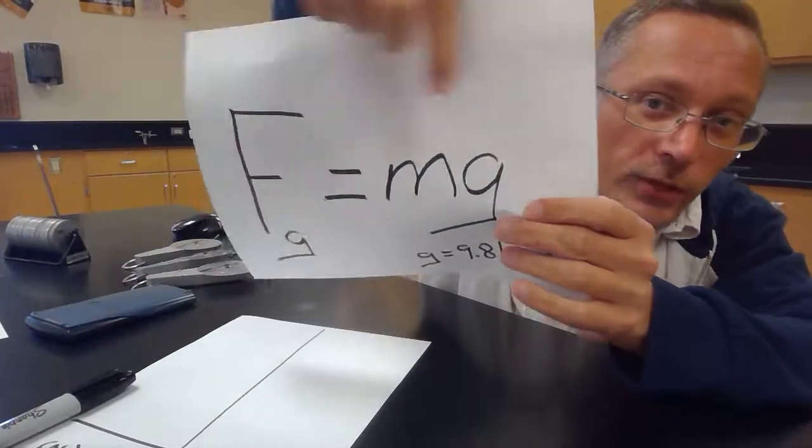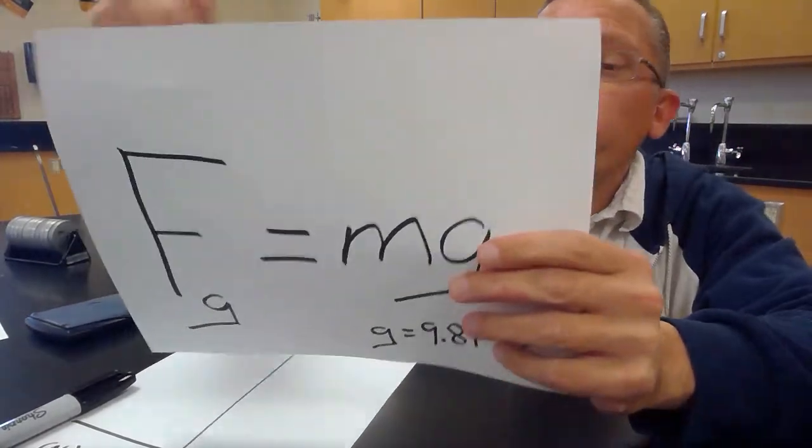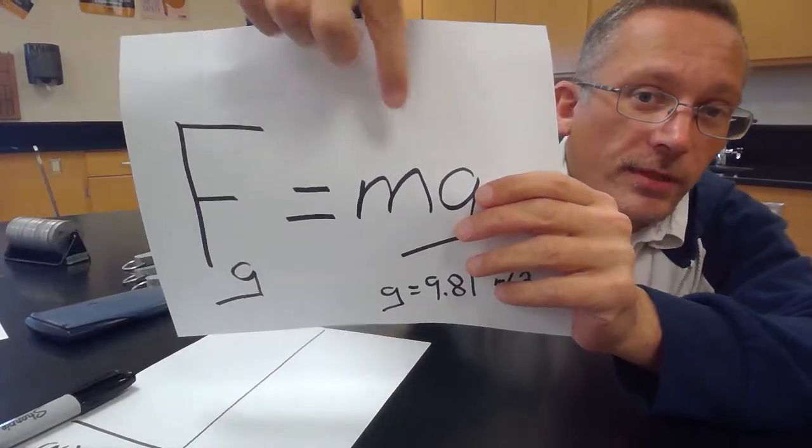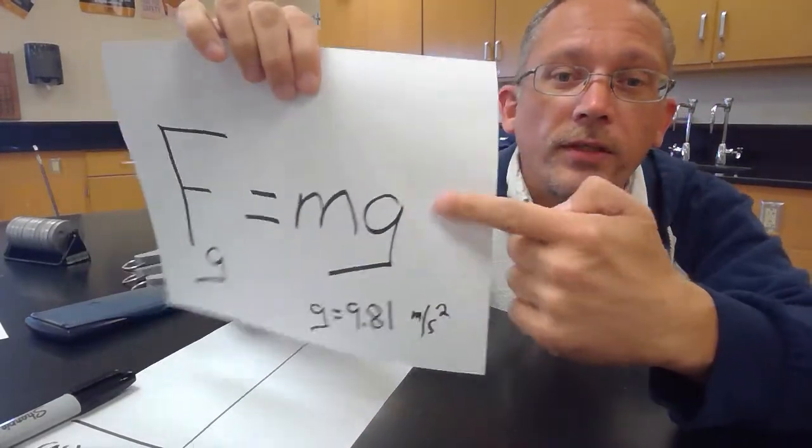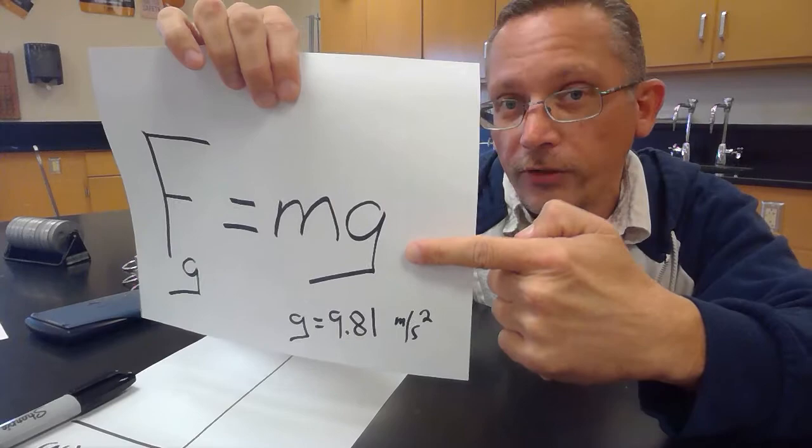Now if you look at the structure of the equation, if I measure the force of gravity on some different masses and I make a graph of that, then the slope of the line of my graph should be g, should be the acceleration from gravity.